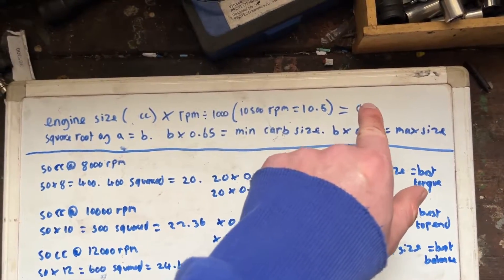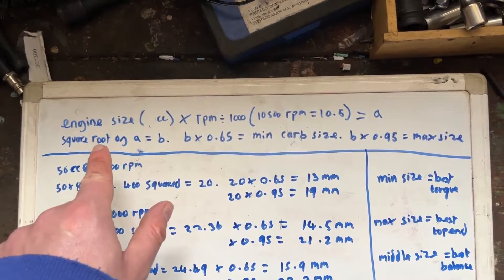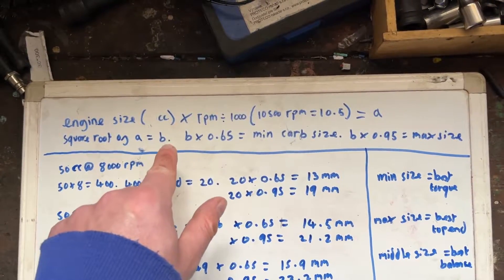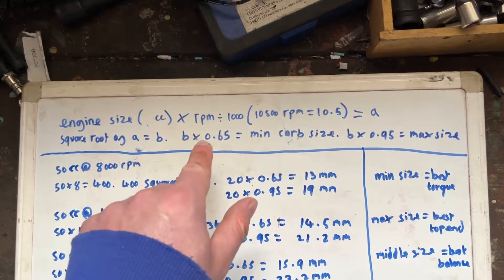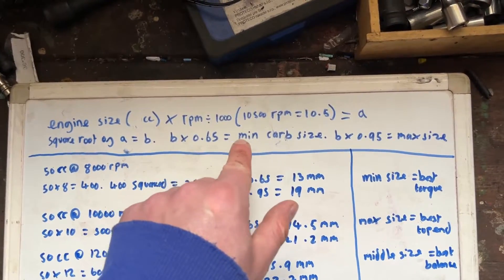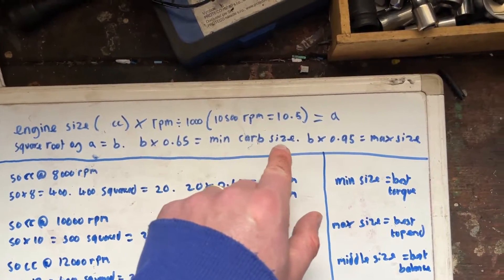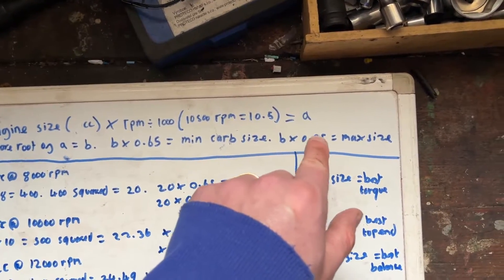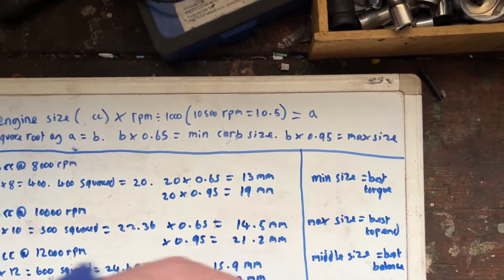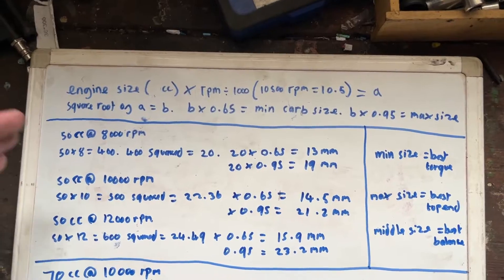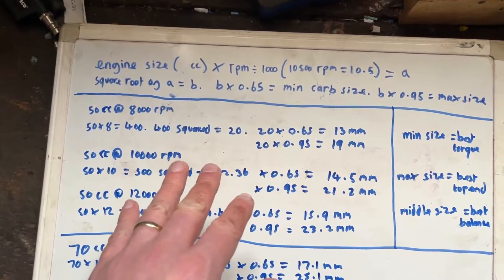You then take that and you find the square root of it which will give you B, and then B times 0.65 will give you your minimum carb size and B times 0.95 your maximum size. So let's just go down and have a look at this in an actual practical use.